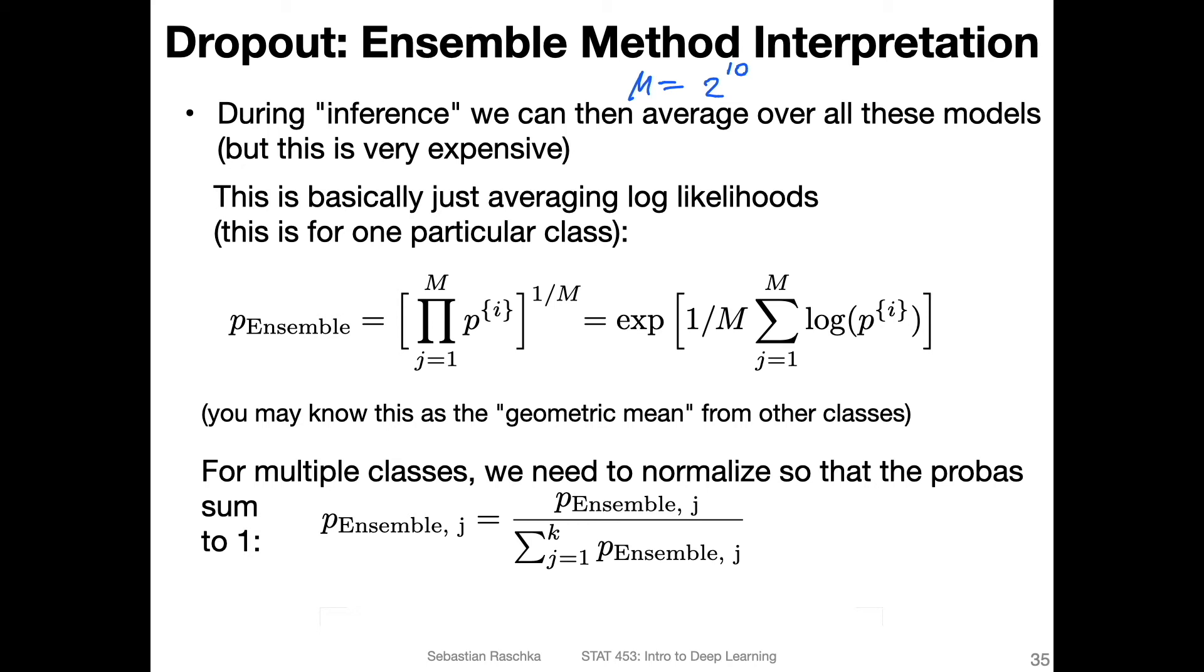So how do we average the predictions of these models? For simplicity, think of a binary classification case. In this case, it's essentially averaging the log likelihoods of the predictions, which is essentially what you probably know as the geometric mean.